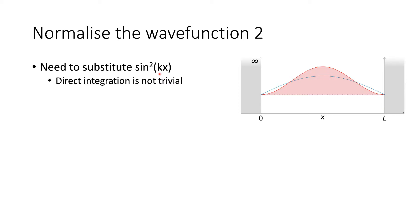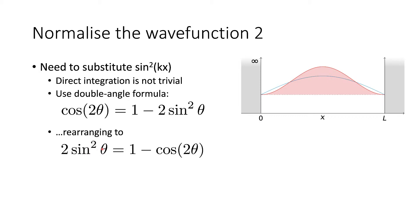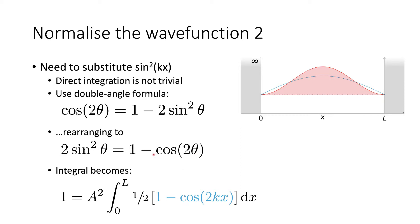The direct integration of sin²(kx) isn't a trivial integral, so we're going to use the double angle formula. We're looking for one which has sin²(kx) in it. We find that cosine of 2θ equals 1 minus 2 sin²θ. The θ is just a general term we can substitute as needed. We rearrange it to make sin²θ the subject, and we end up with sin²θ = (1 − cos 2θ)/2. When we substitute this into the integral, remembering the half that comes from the rearrangement, we end up with an expression that is much easier to integrate.